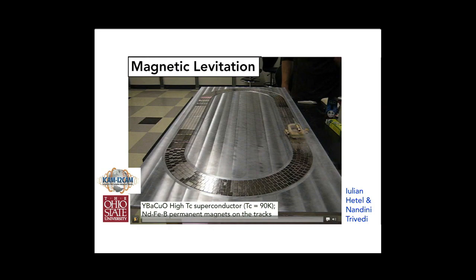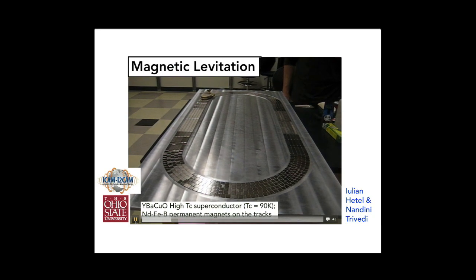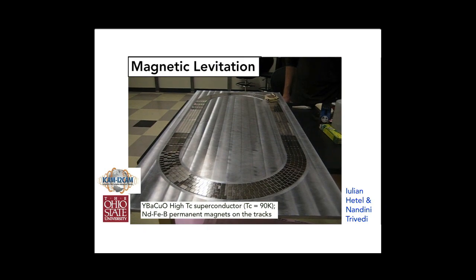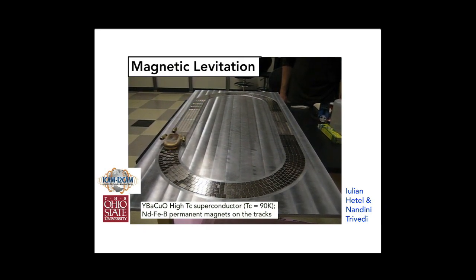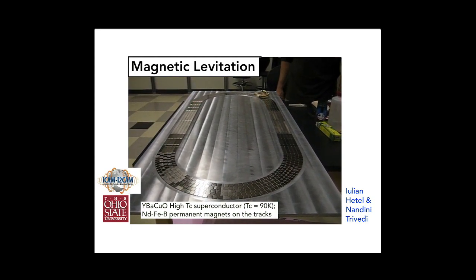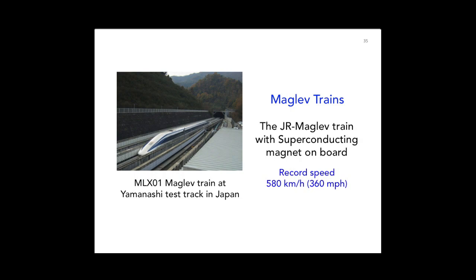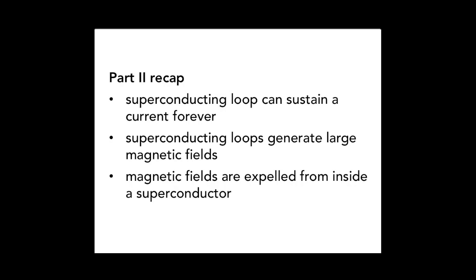Here is an actual train inside which we have put a superconducting pellet. It's been cooled — so because the train has liquid nitrogen in it, the puck is able to remain cold for a long time and circulate multiple times around this track. And that's how we go from ideas to technologies. These simple ideas that work in a lab then go on and become test beds for maglev trains — it has set a record of 600 kilometers per hour and is expected to be in operation in 2027. Recap: superconducting loops can sustain a current forever, these loops generate large magnetic fields, and bulk superconductors expel magnetic fields from inside.